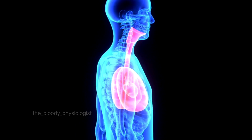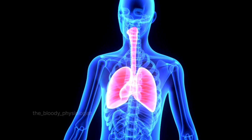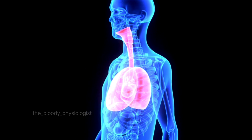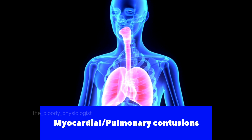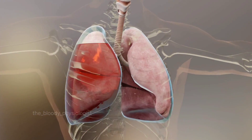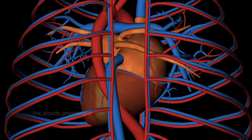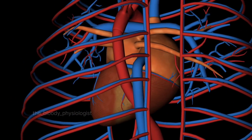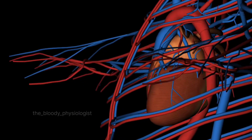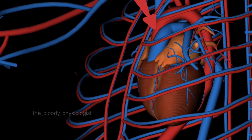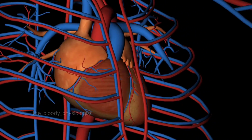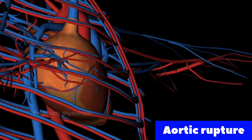Another major cavity that houses important organs is the thorax. During sudden deceleration, the heart and lungs can hit the inside of the ribcage or sternum, causing myocardial or pulmonary contusions. This can also cause rib fractures. A fractured rib can puncture the lung, causing pneumothorax. Just like traumatic brain injury in the head, a dreaded complication in the thorax is traumatic aortic injury. Sudden deceleration during a crash pulls away the relatively mobile ascending aorta and aortic arch away from the descending aorta, which is well anchored to the thorax. This can even lead to aortic rupture, which is a potentially fatal condition.